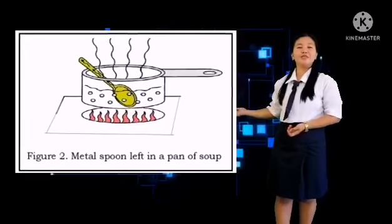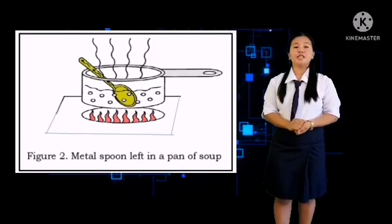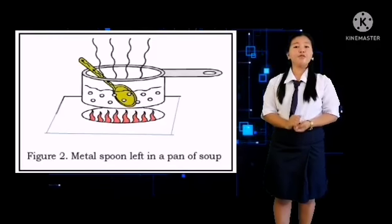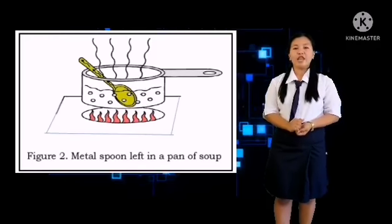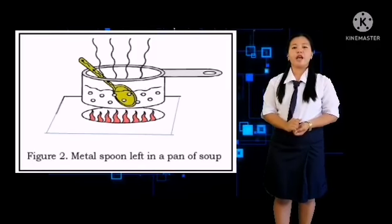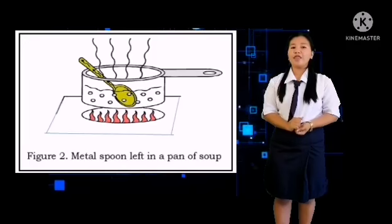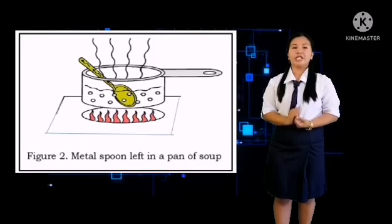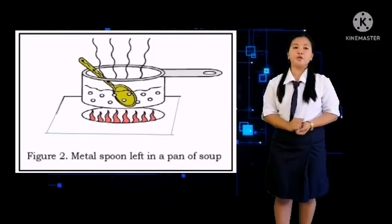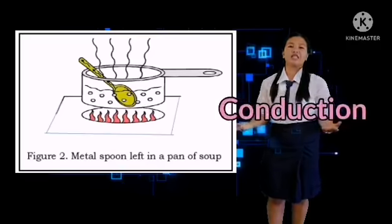In Figure 2, a metal spoon is placed in a pan of hot soup that is sitting on the stove. The spoon is in direct contact with the hot soup, and heat is transferred to the spoon. That is called conduction.